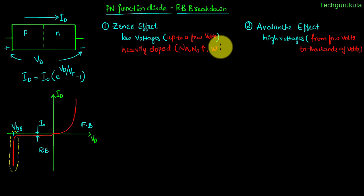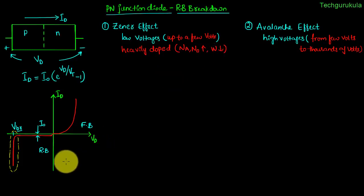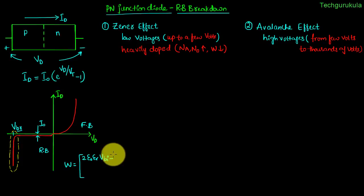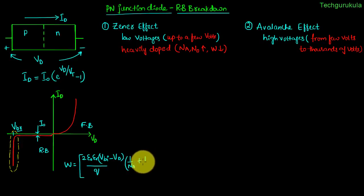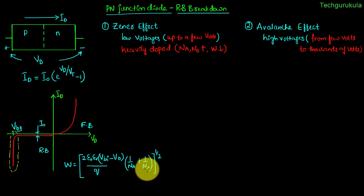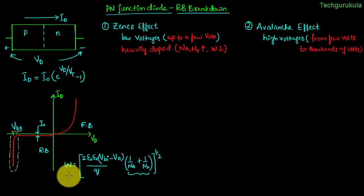When we say a P-N junction is heavily doped, we mean the doping concentration on the p-side and n-side are both high. As a result, the depletion width would be small. The expression for depletion width in an abrupt P-N junction is W = sqrt(2·ε_0·ε_r·(V_bi − V_D) / q · (1/N_A + 1/N_D)). If N_A and N_D are high, that term is very small, and overall the depletion width would be small.